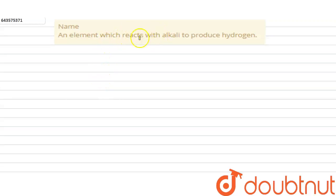an element which reacts with alkali to produce hydrogen. So let's find the correct answer for this. Silicon is an element which reacts with alkali to produce hydrogen.